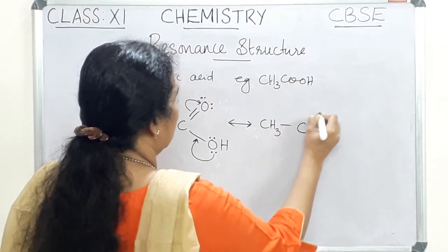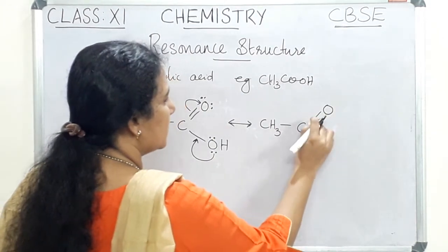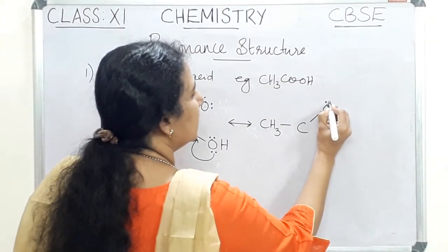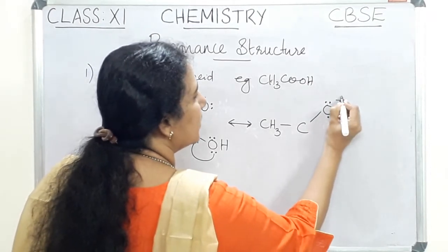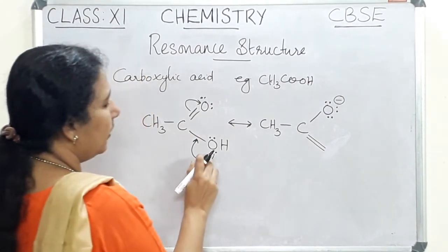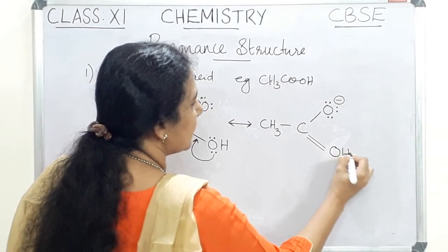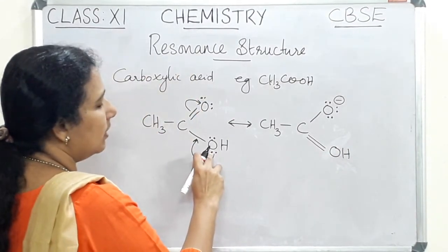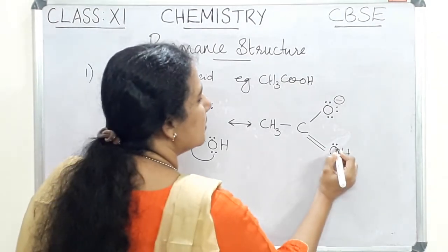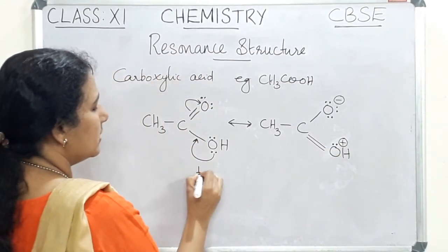In the second structure, there is a single bond and the pair of electrons are shifted towards oxygen. Oxygen is having two lone pairs already, but it acquires one more pair of electrons and thus acquires a negative charge. On the other side, there is a double bond and the electrons are shifted from oxygen, leaving only one lone pair. This oxygen loses one pair of electrons and acquires a positive charge.